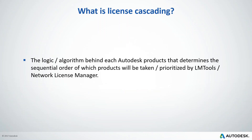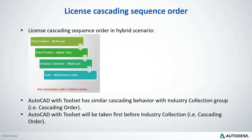Now we'll move on to license cascading. License cascading is the logic behind each Autodesk product — it determines the order in which products are prioritized by the network license manager. Here are the sequence orders for license cascading in a hybrid scenario: if in one license file you have design industry collections, suites, and a point product, this defines the cascading order. AutoCAD with toolset has similar cascading behavior to industry collections, and AutoCAD with toolset will be taken before industry collections.